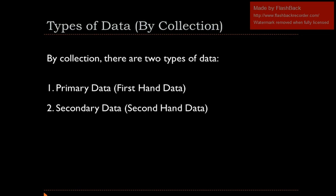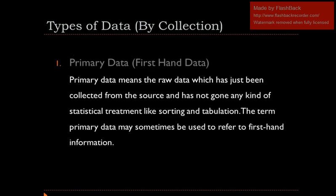First-hand data is the information that you have collected yourself. If you have done it, then you have direct information. Secondary data is the information that you have received from someone else. Primary data means the raw data which has just been collected. This data is the information that you have collected from the source. For example, survey forms and questionnaires that we have filled — even interviews — that is also a primary source of data.